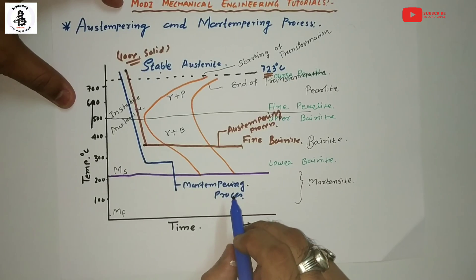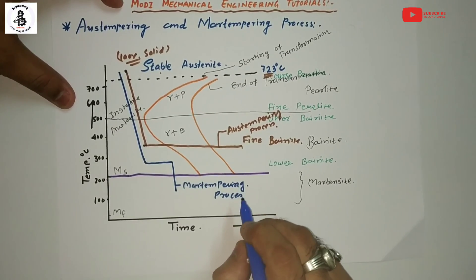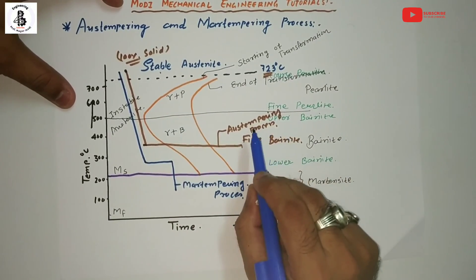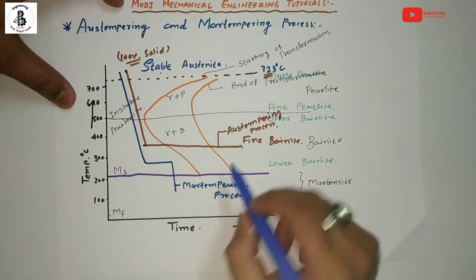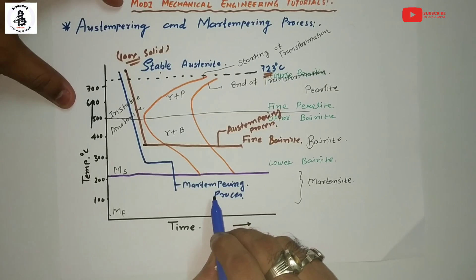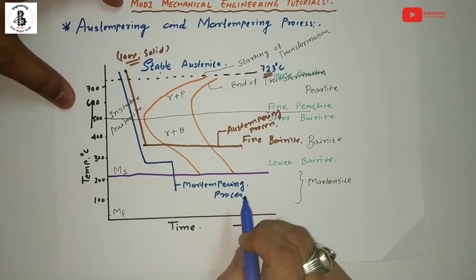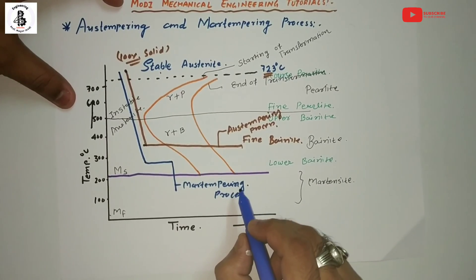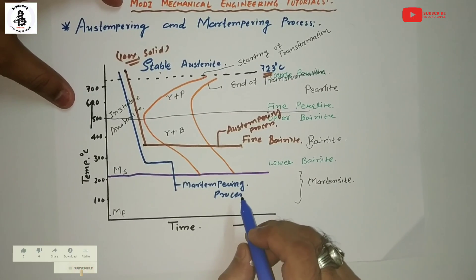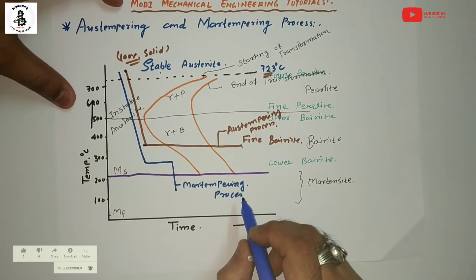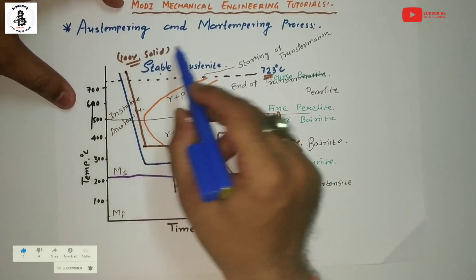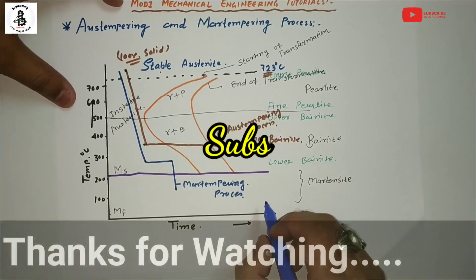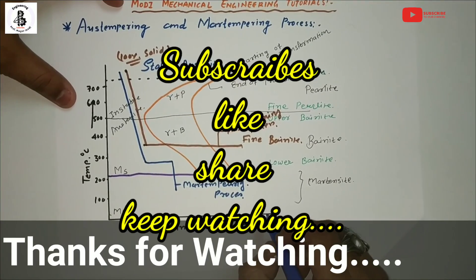By this martempering process, the steels have minimum distortions and minimum residual stresses. Without performing an additional tempering process, stable austenite is converted into a fine bainitic structure with austempering, and stable austenite is converted to martensite with martempering. These two special heat treatment processes give better results than conventional hardening followed by tempering, which takes more time. Austempering and martempering provide good properties compared to other processes. Please subscribe and share — thank you for watching.